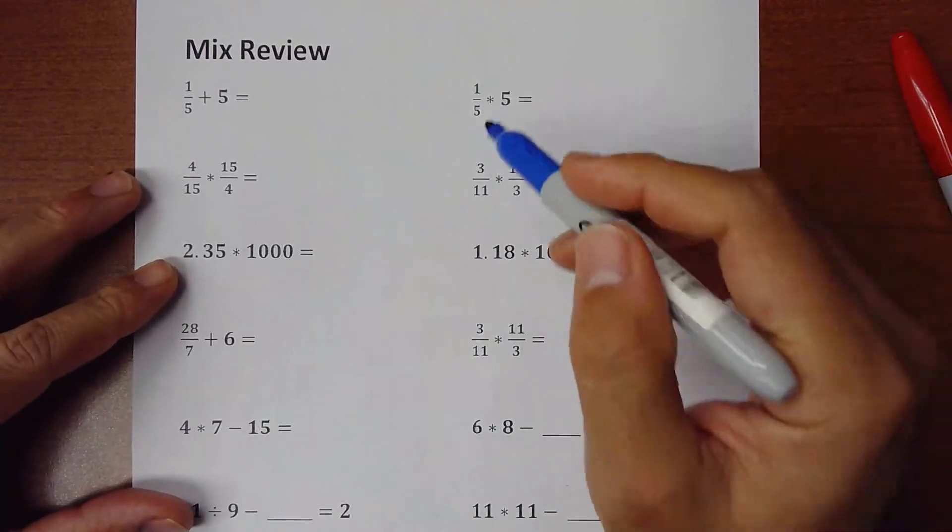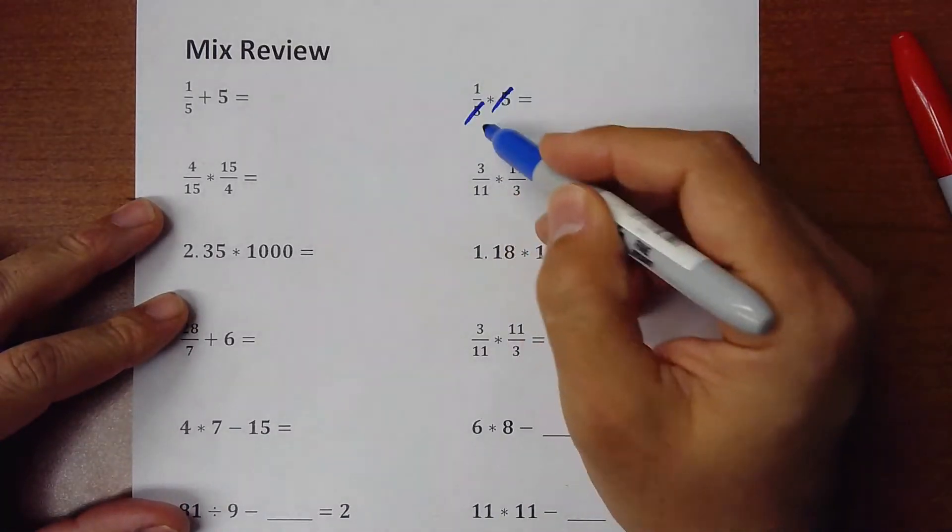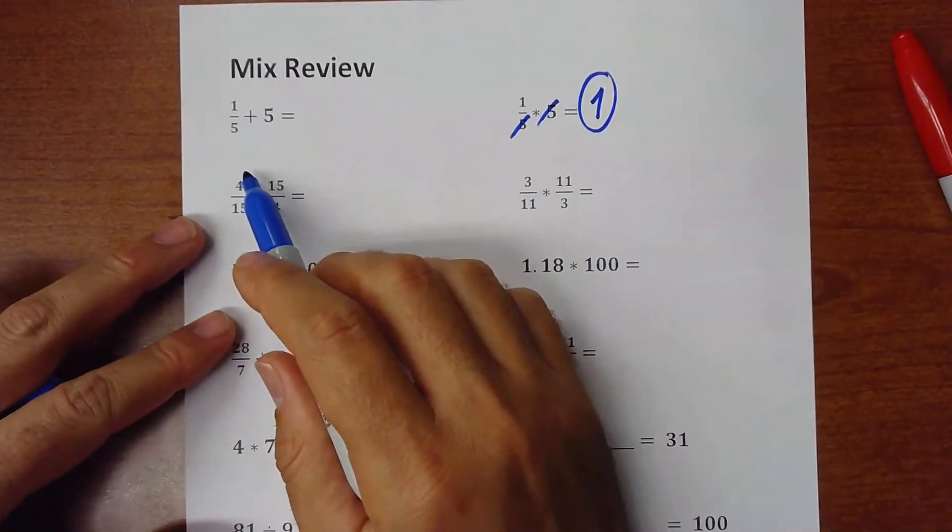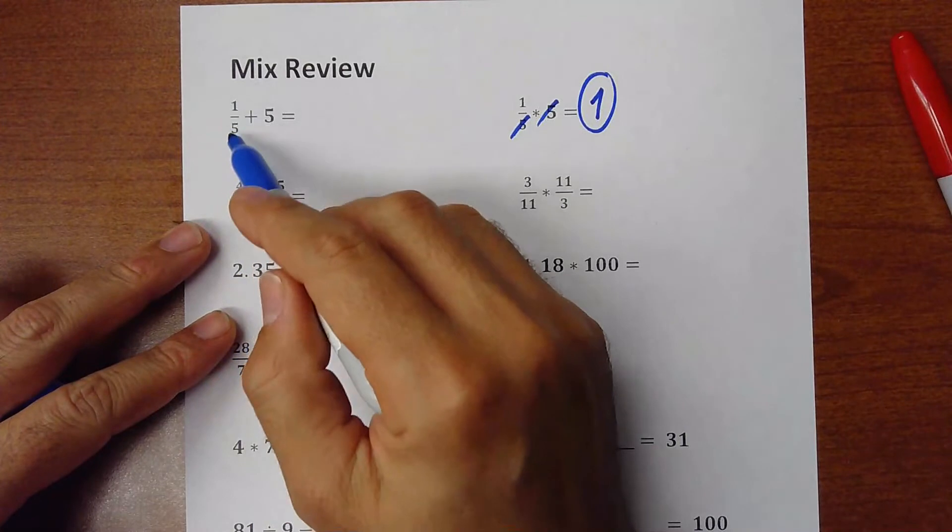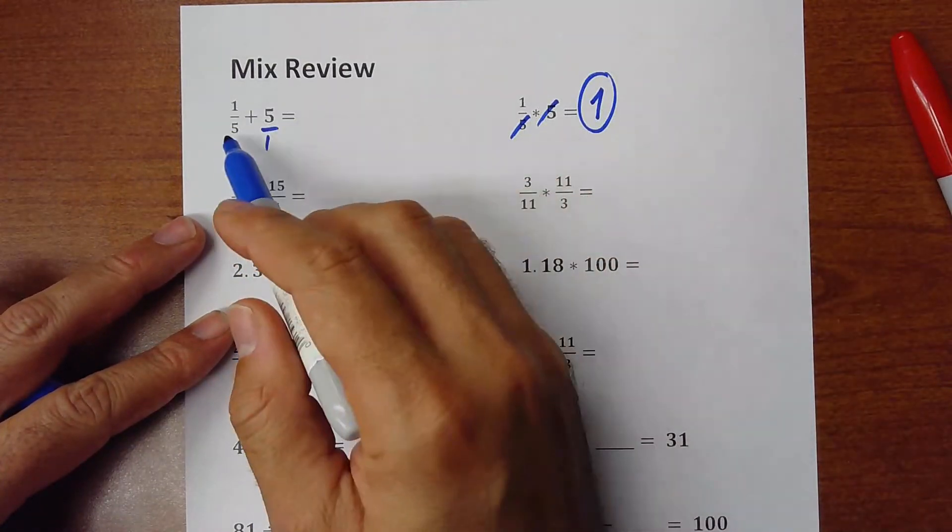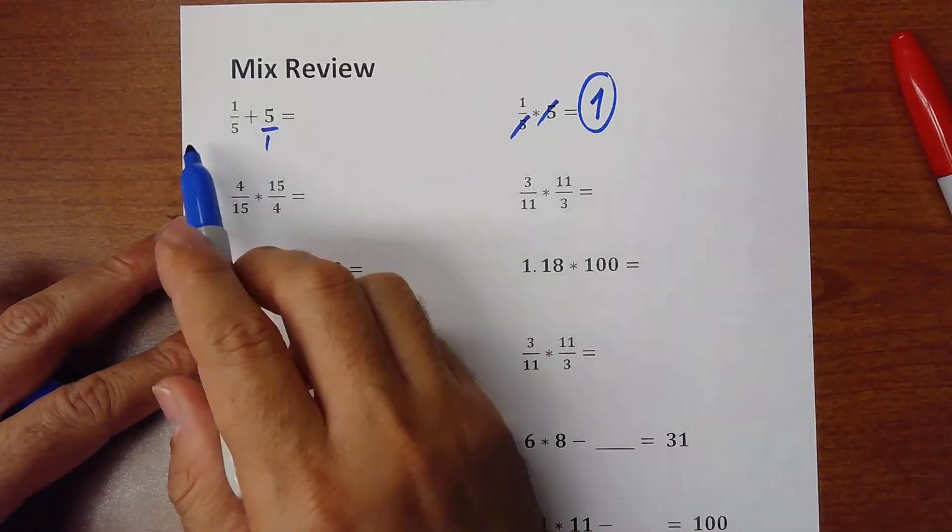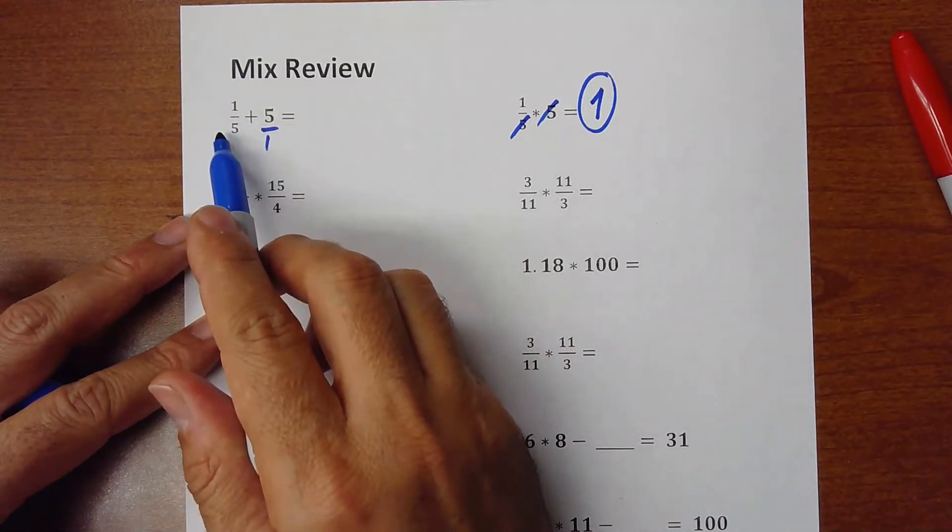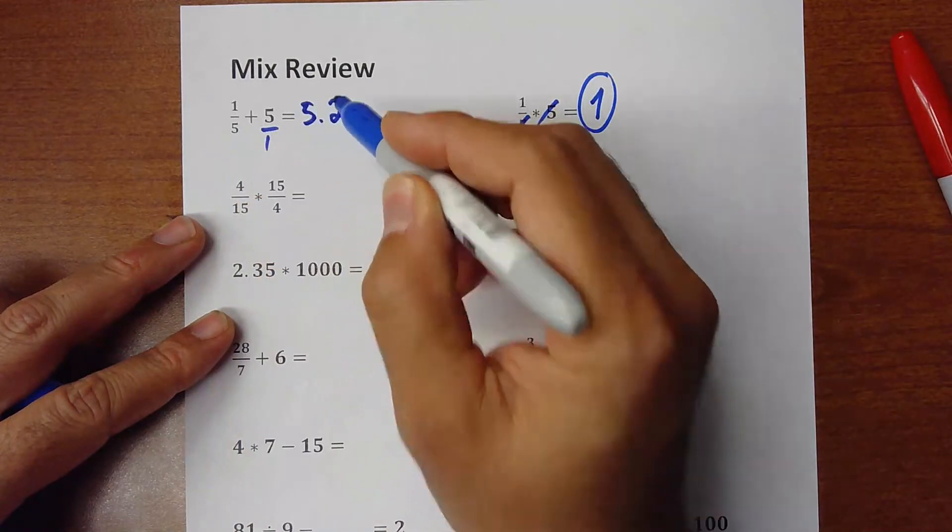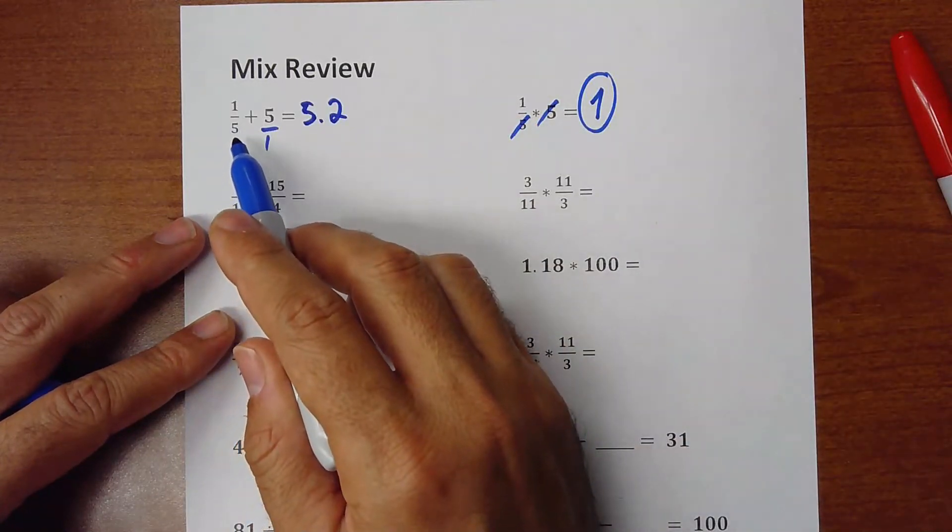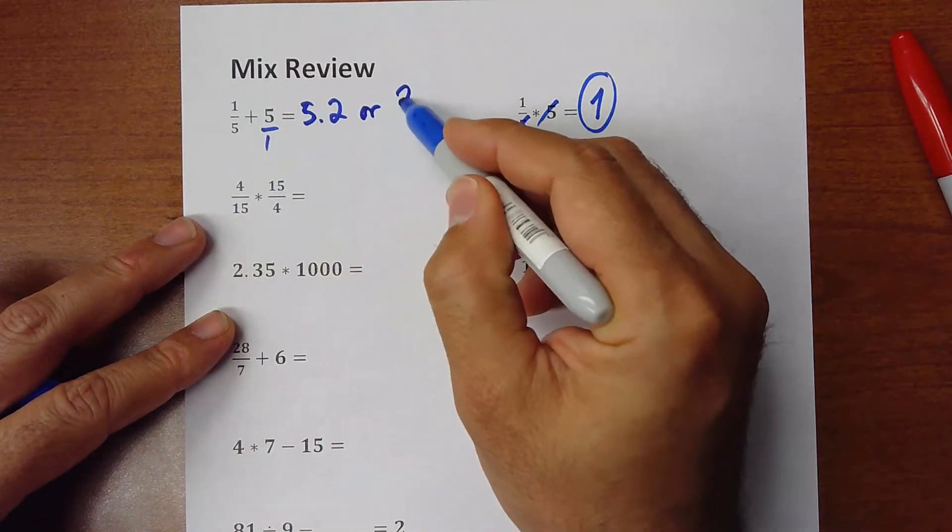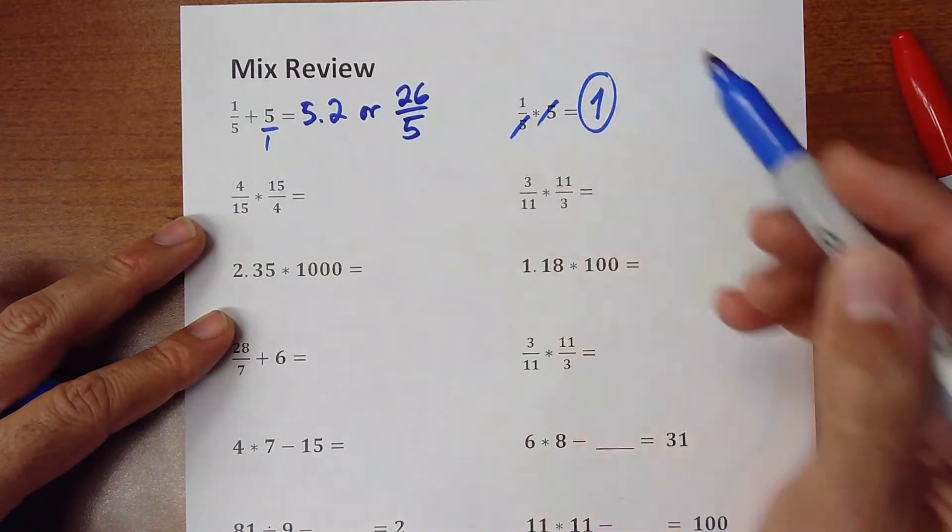Okay, I'll start by this. Here is 1/5 times 5. Just simplify the 5. The answer is 1. It's very simple. But when you are adding, this is 1/5 plus 5. This is like 5 over 1. You can do it as a fraction.